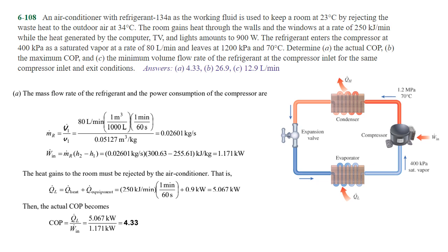For part a, we need to calculate the actual coefficient of performance using the basic formula shown at the bottom. We need to find Q_L dot and we need to find the work in. In order to find the work in, we need to know the mass flow rate. We can calculate the mass flow rate as follows and we get 0.02601 kilograms per second.